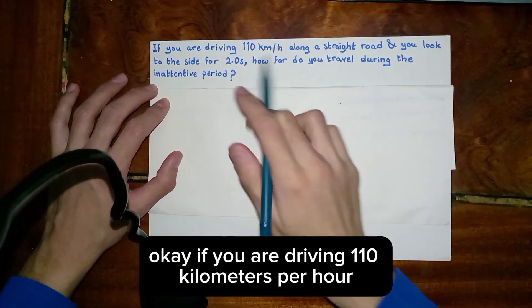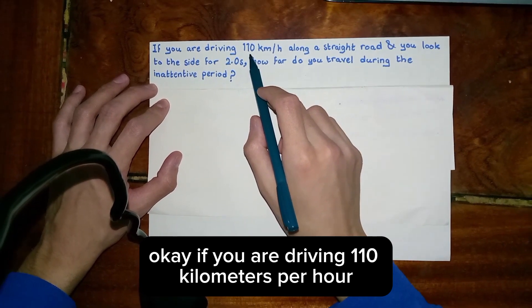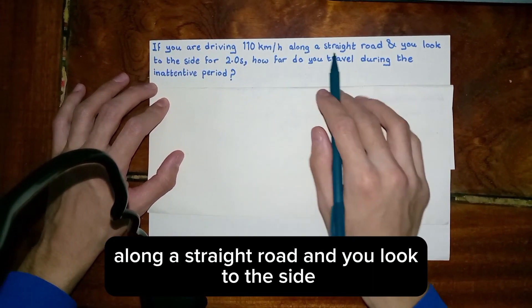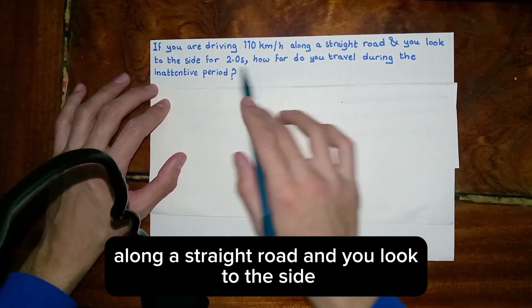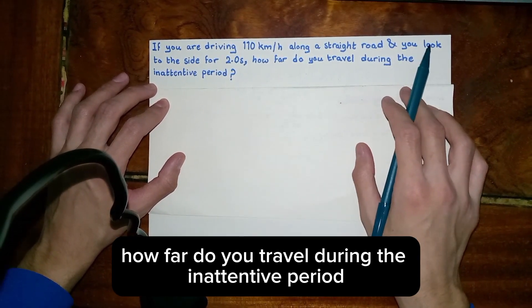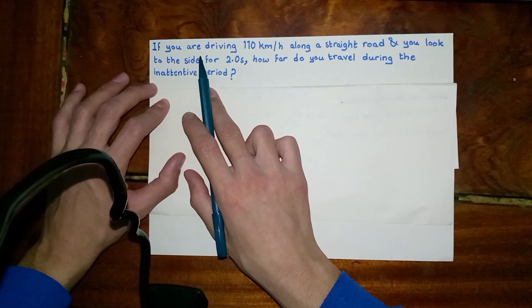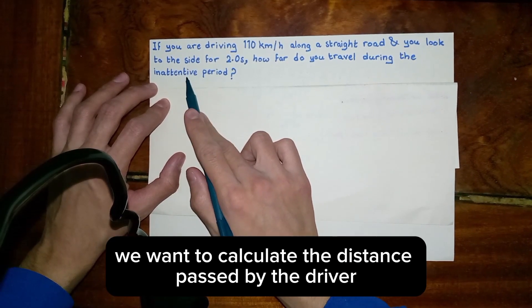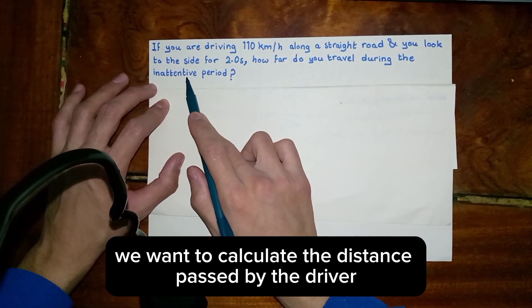If you are driving 110 km per hour along a straight road and you look to the side for two seconds, how far do you travel during the inattentive period? We want to calculate the distance passed by the driver.